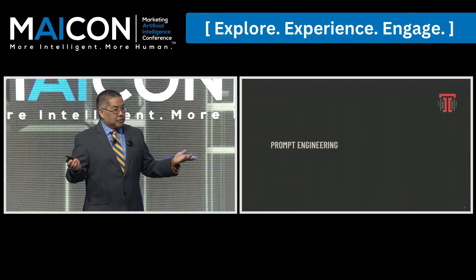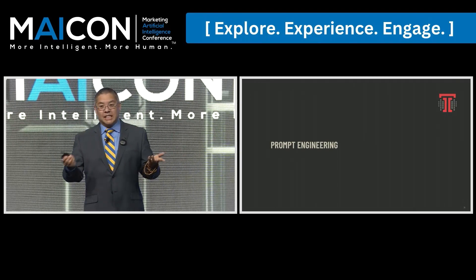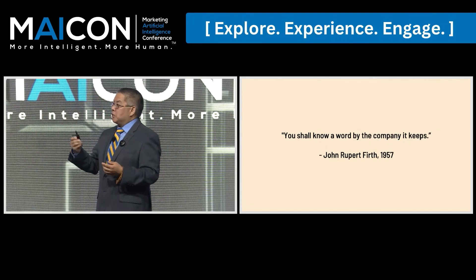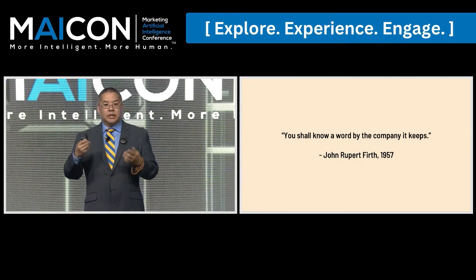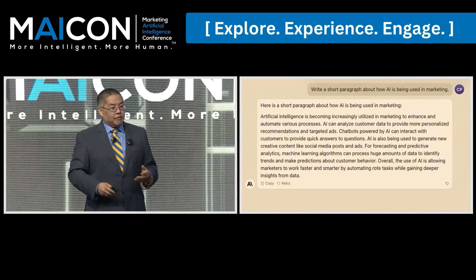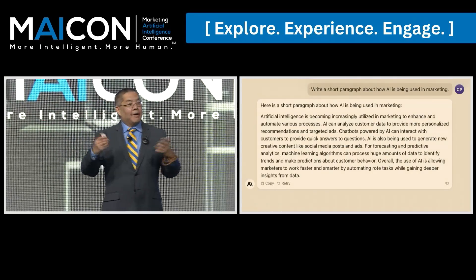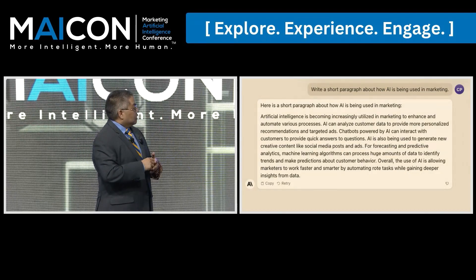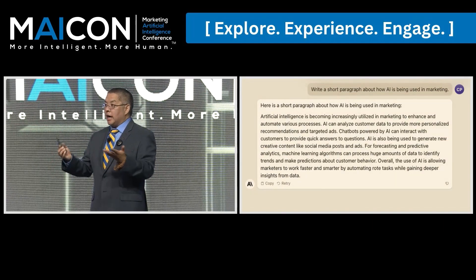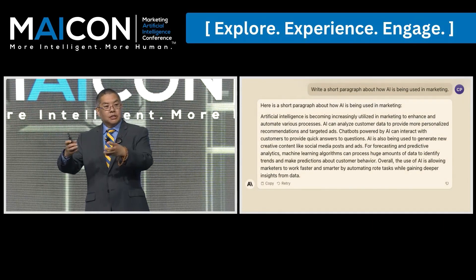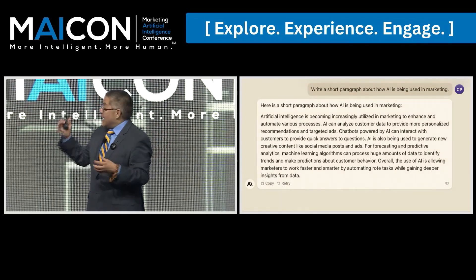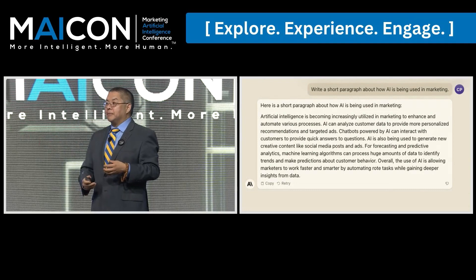How do we talk to them? We talk to them through something called prompt engineering, which is fancy for talking. You shall know a word by the company it keeps. If you talk to a model with very few words, you will get a statistical distribution of the most common things associated with those words. So if I give a model like 'write a short paragraph about how AI is being used in marketing,' this is Claude. It spit out a very bland, kind of boring, very generic paragraph. Why? I didn't give it very many words.